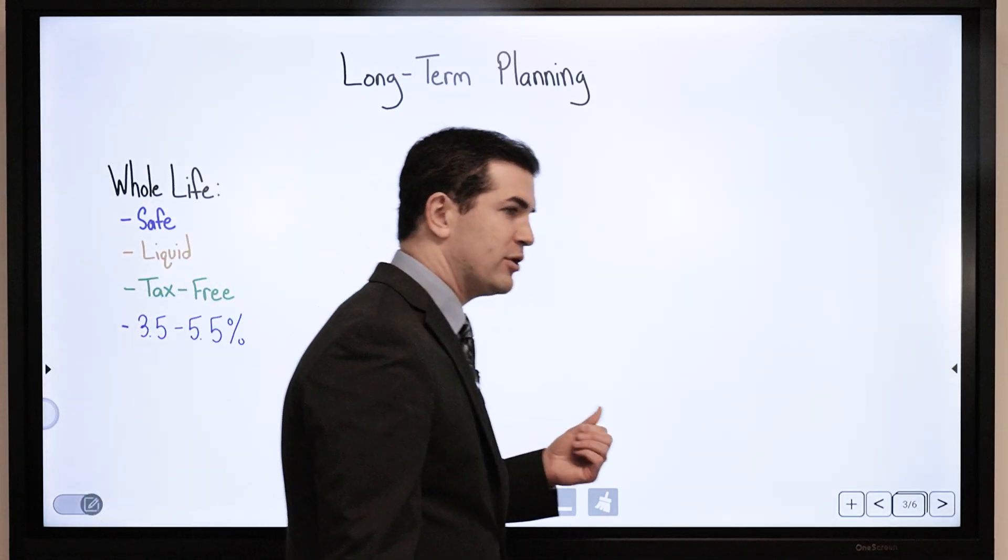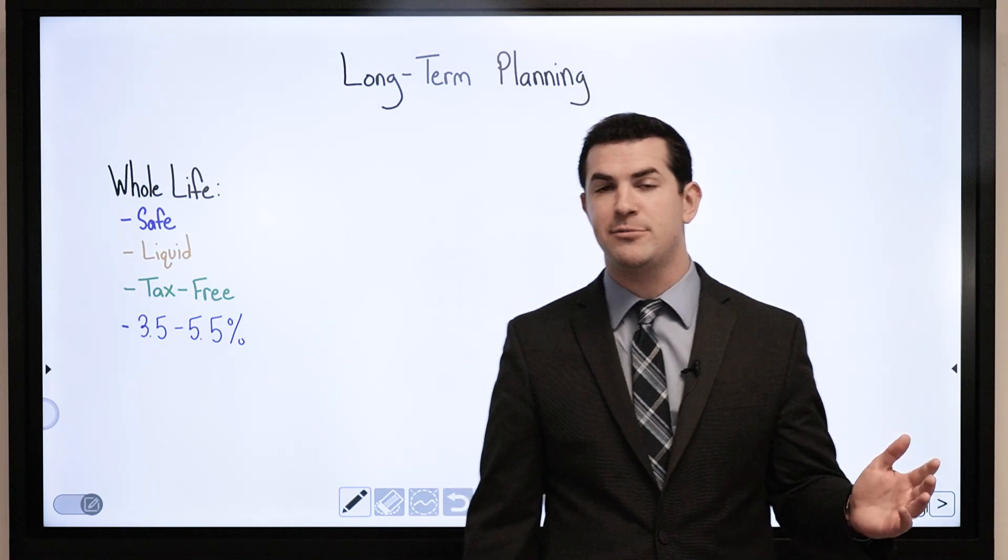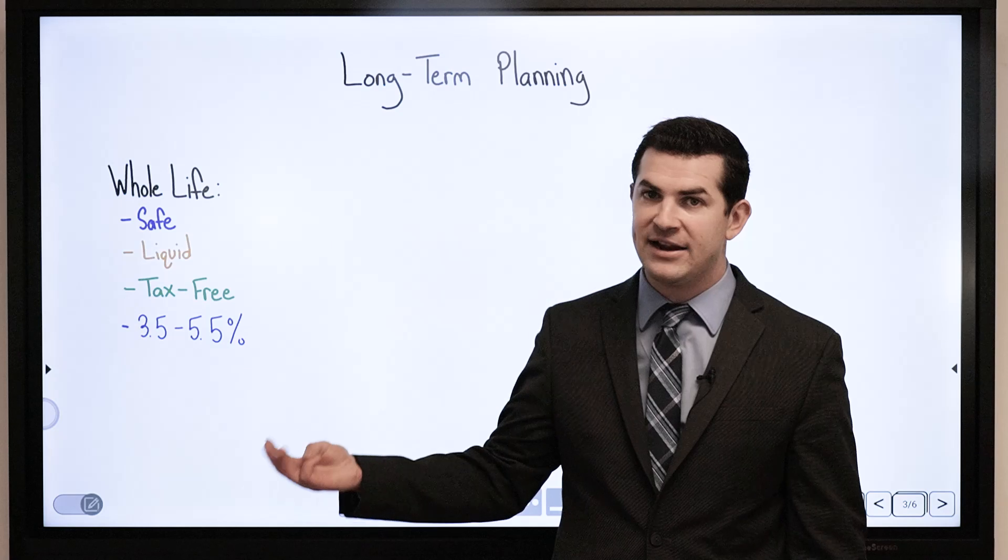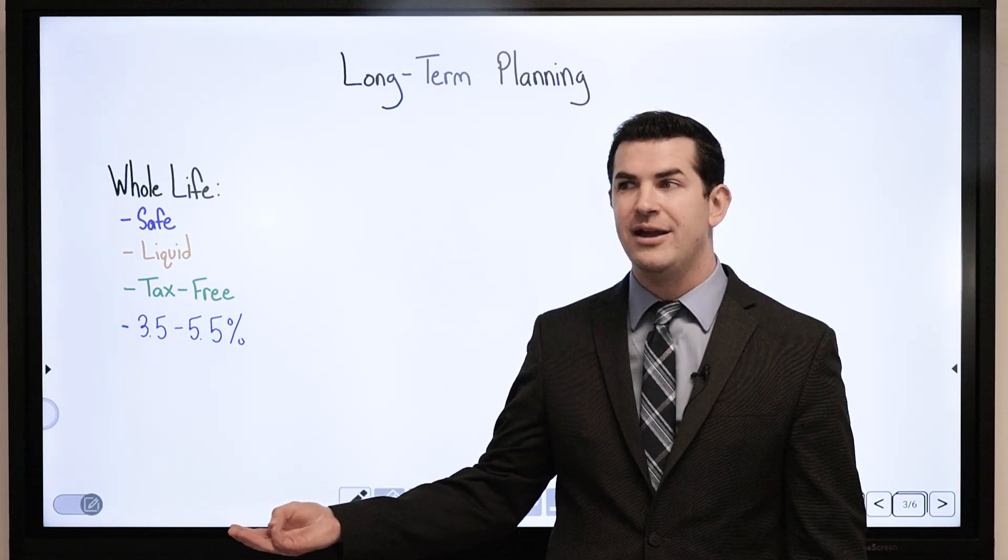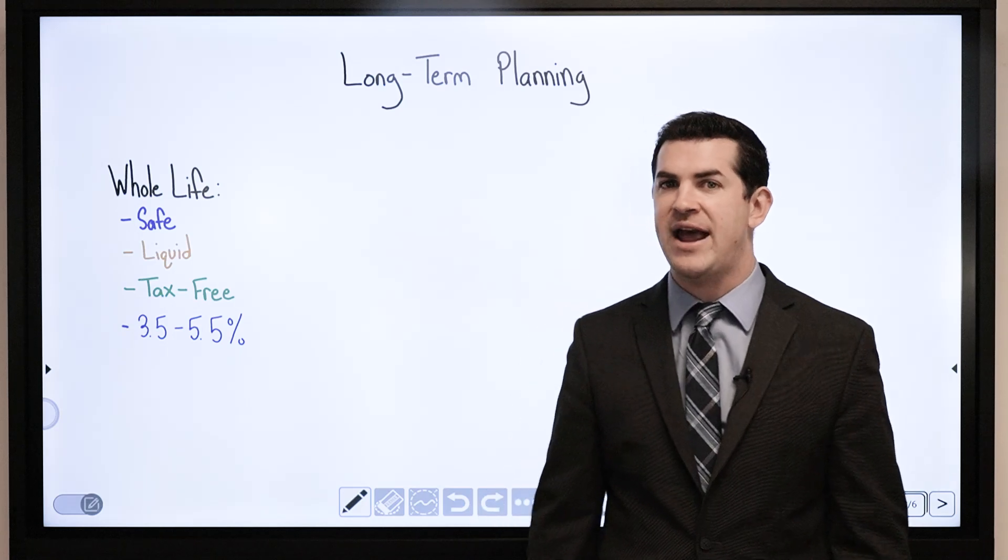What are the core benefits first and foremost? We talk about this a lot with whole life insurance. If we design it properly for maximum cash value, it is a safe, liquid, tax-free area to position money that will produce somewhere between 3.5% and 5.5%.